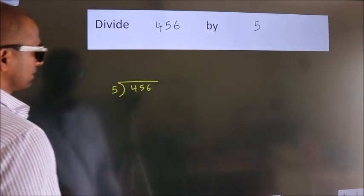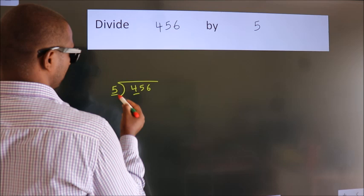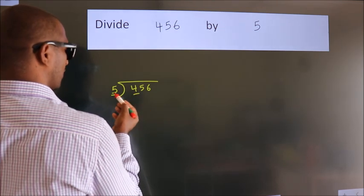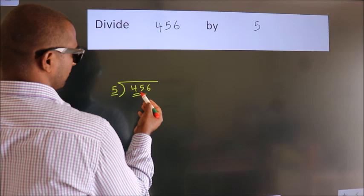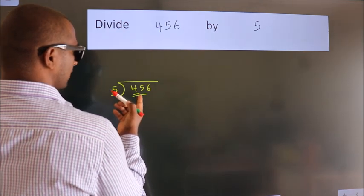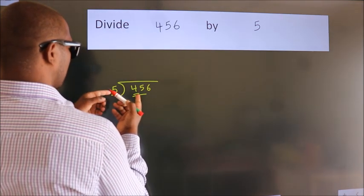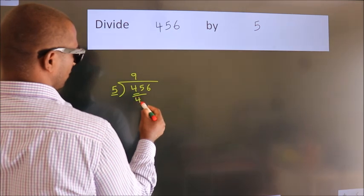Next, here we have 4, here 5. 4 is smaller than 5, so we should take 2 numbers, 45. When do we get 45? In the 5 table. 5 nines, 45.